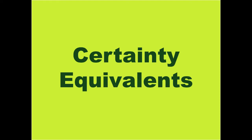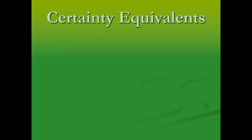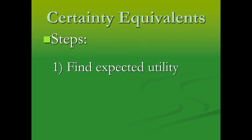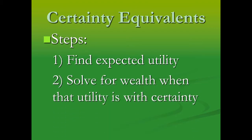Let's look at the process for doing a certainty equivalent. First, you're going to find the expected utility from some gamble. Then you're going to take that expected utility and plug it back into your utility function and solve for the amount of wealth or income that you would have when the probability is one — when we have that outcome with certainty. So really what we're doing is reversing the equation. We now know what the utility should be, making it equivalent to the utility we get from the gamble.